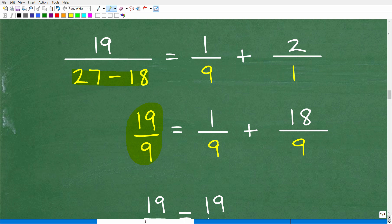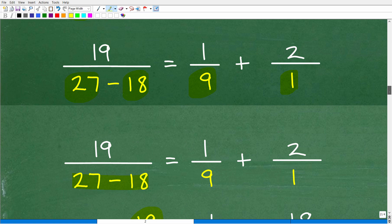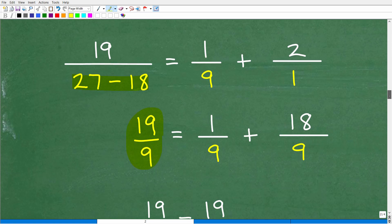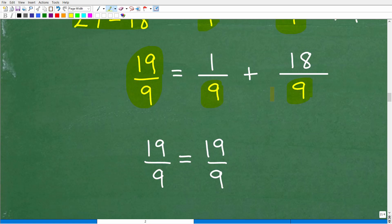So I have 19 over 27 minus 18. 27 minus 18 is 9. Okay, so the left-hand side simplified to 19 over 9. And I'm left with this side of the equation right here, which was, remember, 1 over 9 plus 2 over 1. So let's go ahead and fix this fraction problem up. So we want to get this lowest common denominator. This is a 9. This is a 1. Let's rewrite this fraction here with a 9 as a denominator. We need to multiply that by 9 and the numerator by 9. So we're going to end up with 18 over 9.